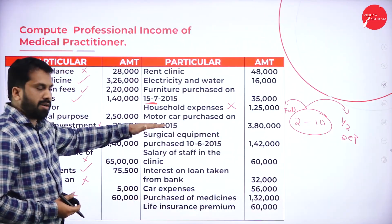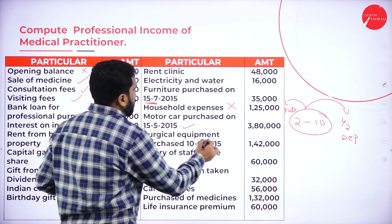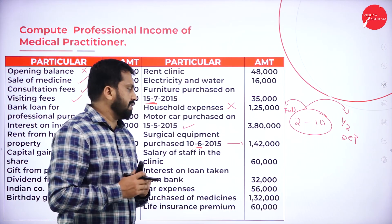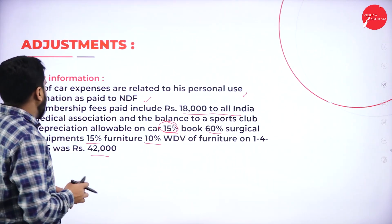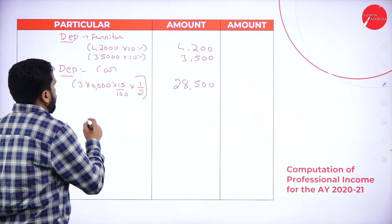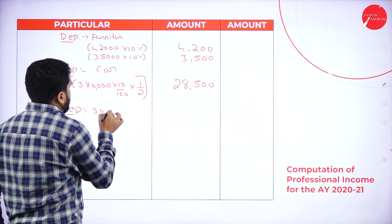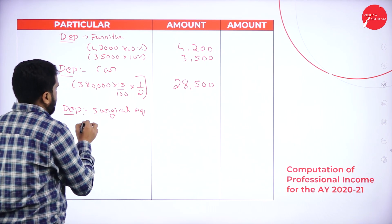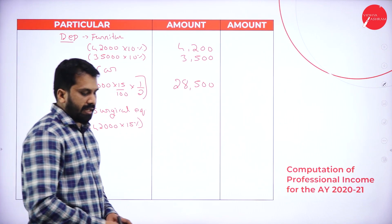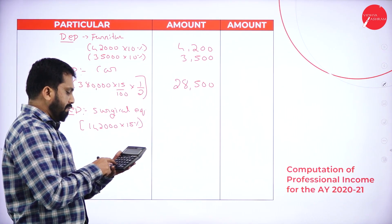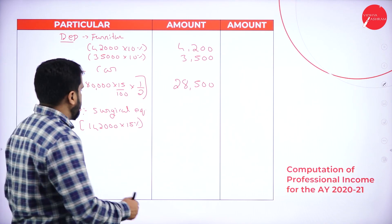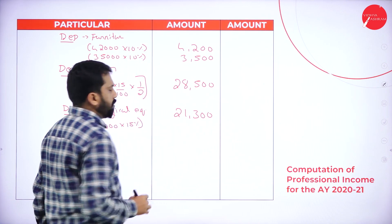Next: surgical equipment worth 1,42,000, purchased in June — before Gandhi Jayanti (2nd October), so full depreciation applies. Depreciation on surgical equipment: 1,42,000 × 15% = 21,300.